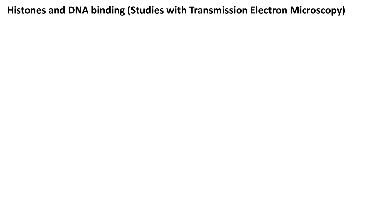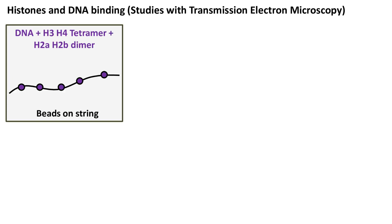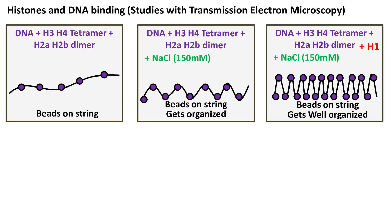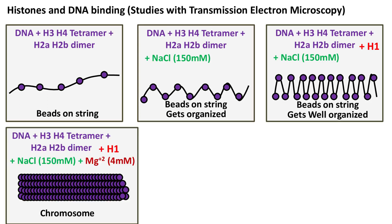Now, while studying histones and DNA on the transmission electron microscope, scientists found that addition of salt makes this structure more organized. Addition of histone H1 to this makes the overall structure even more organized. And finally, when magnesium ions are added, the structure folds itself into a structure similar to that of a chromosome.